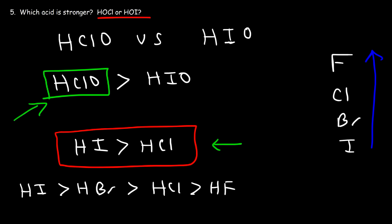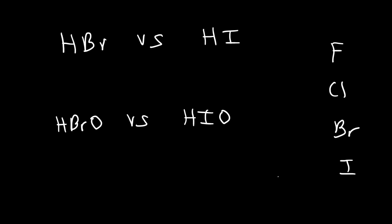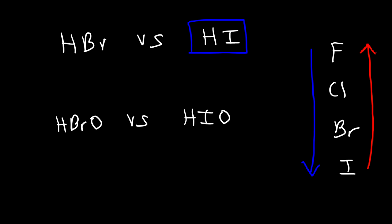For binary acids, the trend relates to atomic size — the iodide ion is bigger than the chloride ion, so the iodine ion is more stable and can stabilize the negative charge better, making HI easier to ionize. To confirm your understanding: for binary acids, HI is stronger than HBr; for oxyacids, bromine is more electronegative than iodine, so HBrO is a stronger acid than HIO.